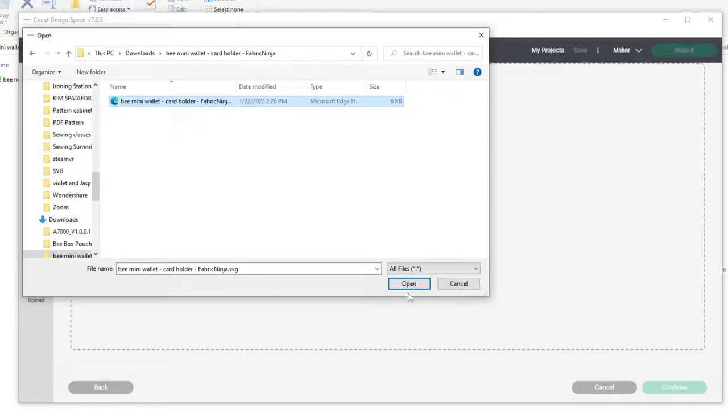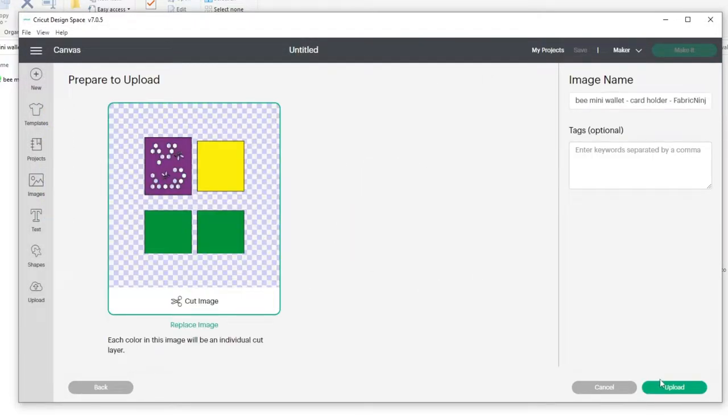We're going to open up Cricut Design Space, however you get to it. We're going to start a new project, and then we go to Uploads, Upload Image, Browse, and you need to go back to that Downloads folder. B Mini Wallet Card Holder, open, and then press Upload.